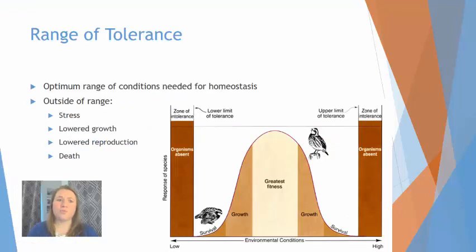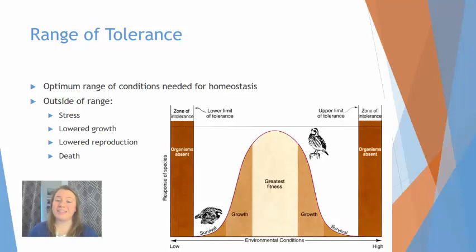First, I want us to remember the term range of tolerance. The range of tolerance is the optimum range of conditions needed for an organism to maintain homeostasis. Anytime the conditions get outside of that ideal range, that particular species is going to experience stress, lowered growth, lowered reproduction, and possibly death. This range of tolerance includes conditions such as temperature, adequate access to shelter, or the pH of water.